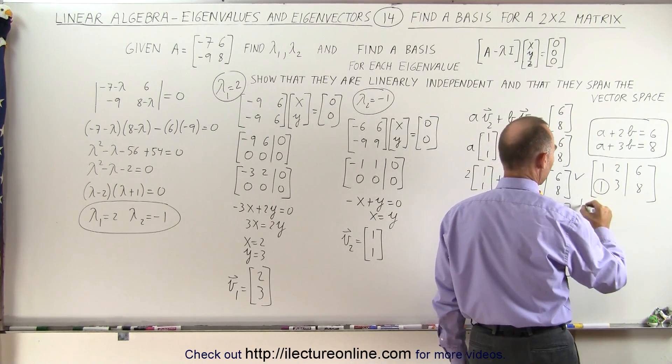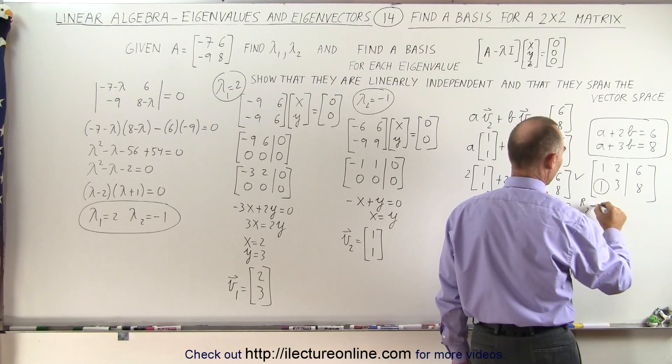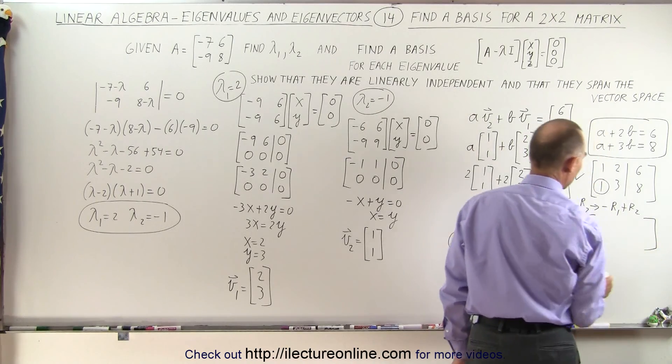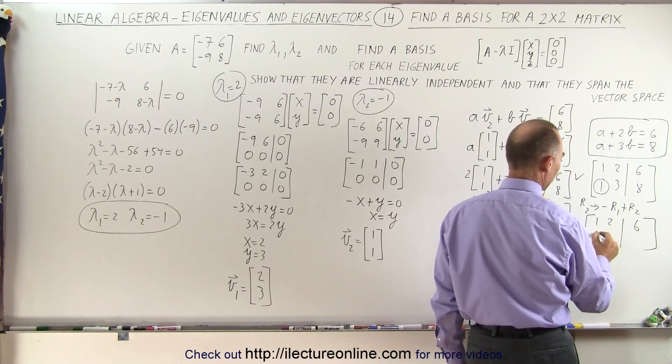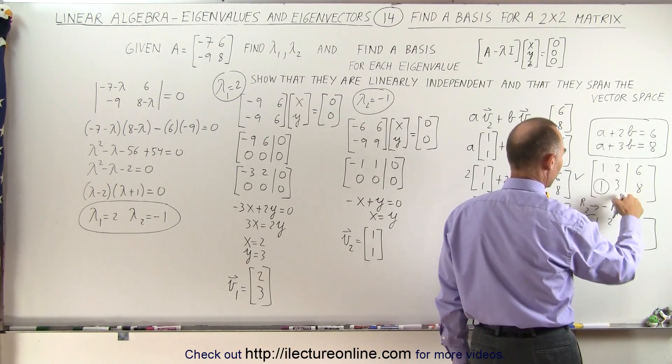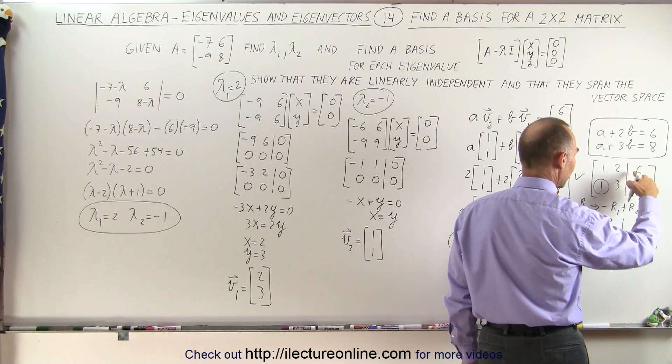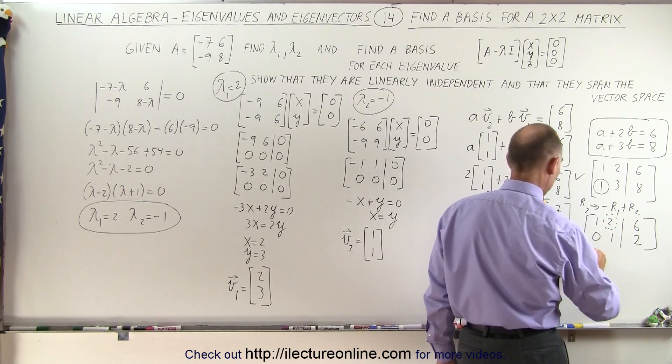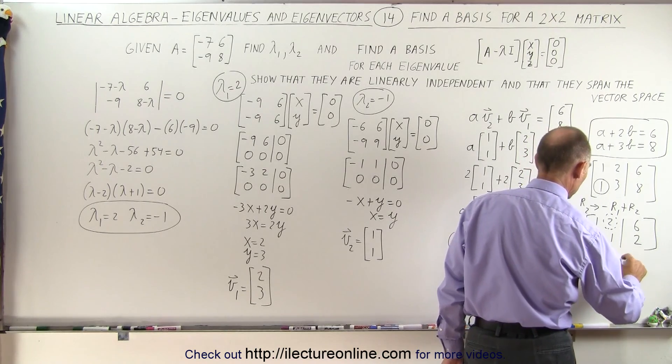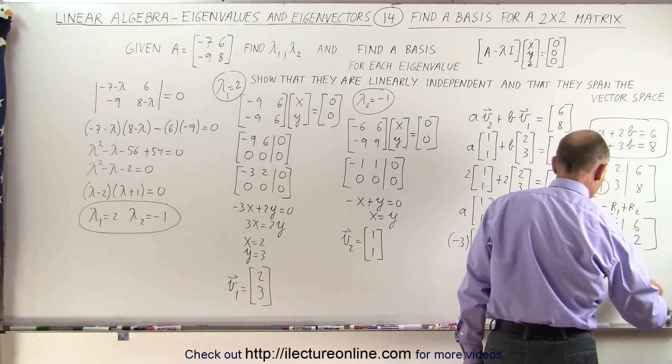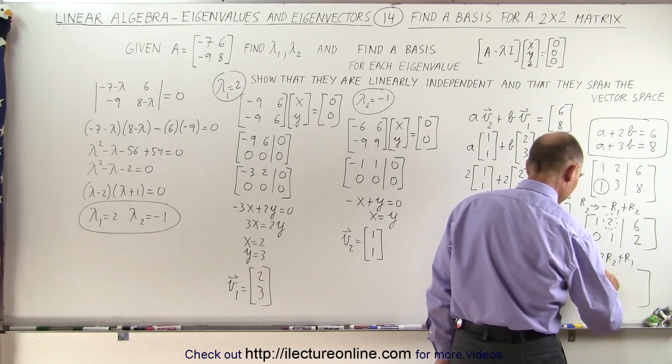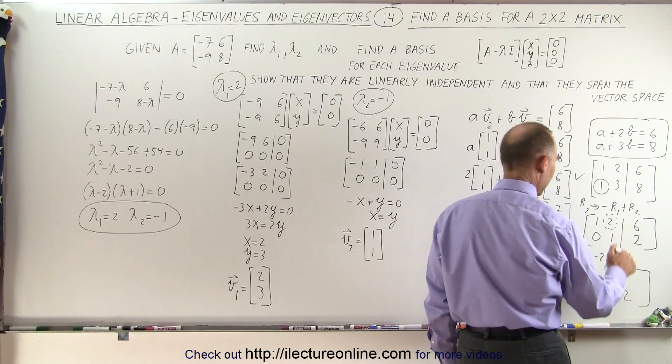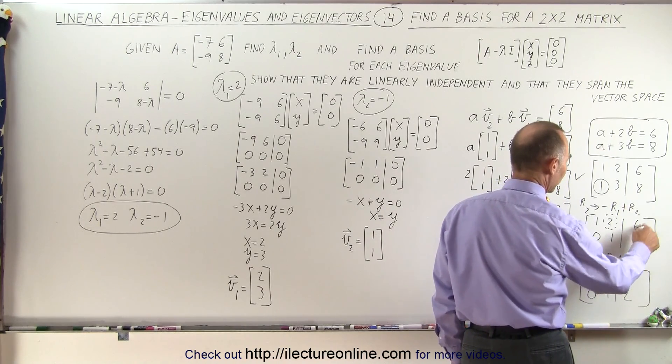We're going to eliminate this one here by saying I'm taking row 2 and replacing it by negative row 1 plus row 2. When I do that, I get 1, 2, and 6. Here this becomes 0. Minus 2 plus 3 is 1. Minus 6 plus 8, which is 2. Since I have a 1 here, I'm going to eliminate this 2. I can do that by taking row 1 and replacing it by negative 2 times row 2 adding it to row 1. When I do that, I get 0, 1, and 2. This is still a 1. So minus 2 times this added to that gives me 0. Minus 2 times this is minus 4 added to 6, which is 2.